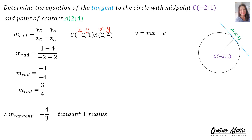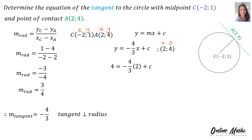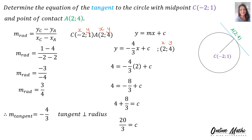Back to Y = MX + C, the equation for the tangent. In M's place, the gradient of the tangent is −4/3, so Y = (−4/3)X + C. To find C, we need a coordinate — the point (2, 4) that lives on the line. In Y's place we substitute 4, in X's place we substitute 2. Then −4/3 times 2 is −8/3. Moving −8/3 across: 4 + 8/3 = C, and C's value is 20/3. Therefore the equation of the tangent is Y = (−4/3)X + 20/3.